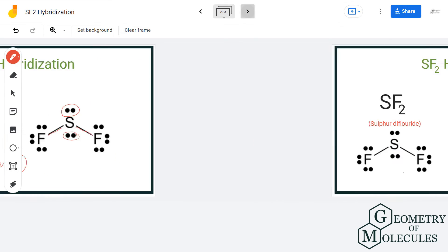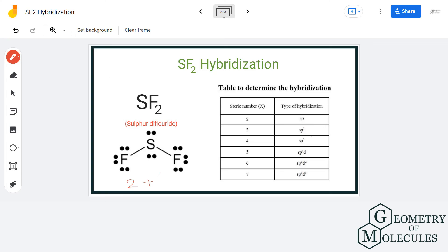Let us add the two. We have 2 sigma bonds plus 2 lone pairs which equals to the steric number of 4. That corresponds to the SP3 hybridization.